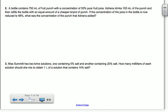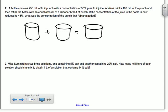So it says a bottle contains 750 milliliters of fruit punch with a concentration of 50% pure fruit juice. Adriana drinks 100 milliliters of the punch and then refills the bottle with an equal amount of a cheaper brand of punch. If the concentration of the juice in the bottle is now reduced to 48%, what is the concentration of the punch that Adriana added?